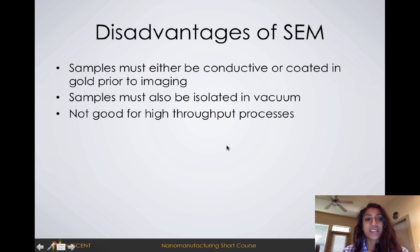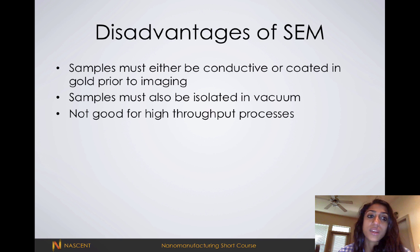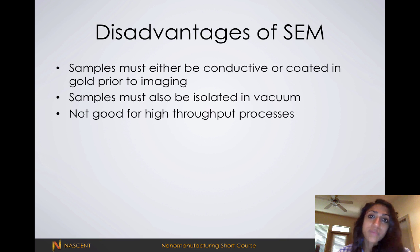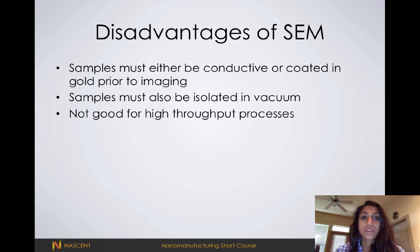The main disadvantage of SEM is that because we're using electrons, samples have to be conductive. For example, polymers that aren't very conductive have to be coated with gold, platinum, or iridium to make them conductive so the SEM can image them. This becomes a problem especially at the nanometer length scale, because these coatings need to be on the order of 8 nanometers — so if you have a 10 nanometer feature, coating it with an 8 nanometer coating isn't viable for accurate feature measurements.